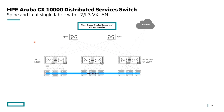The first use case is a spine-leaf fabric supporting Layer 2 and Layer 3 VXLAN. In this illustration, there are two spines — it scales to more — with CX 10,000 in VSX switch pairs at the top of rack and also on the border leaf. Connecting to the top-of-rack leaves we have our virtualization server layer. With this architecture, we have the ability to apply a firewall policy at the top of rack.